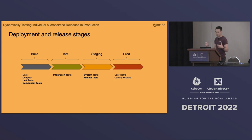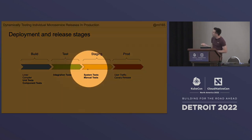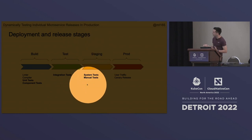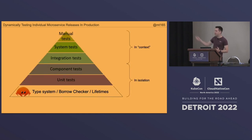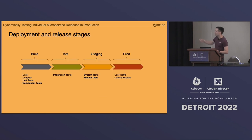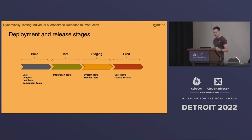Most people do integration tests and end-to-end tests like this: the build environment does unit and component tests, a test environment does integration tests, and a staging environment handles system tests. System tests and manual tests are both end-to-end tests — system tests are automated, manual tests are done by a human. Then we have prod, where we actually release and the service starts to get user traffic because we've tested it.